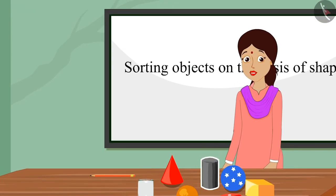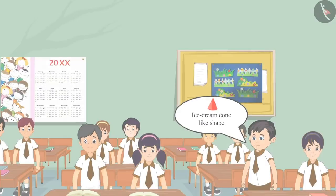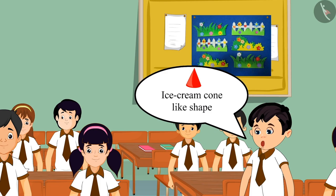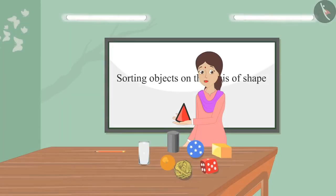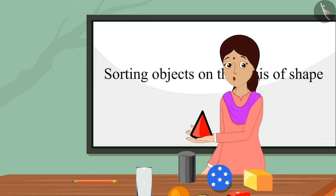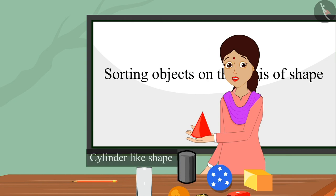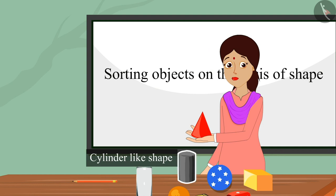Very good, Arti — well said, this has a cylinder-like shape. The teacher shows one more object and a child says: this has an ice cream cone-like shape. Very well, Chotu — well said, this has a cone-like shape. And here we also have a shape that looks like a cylinder.